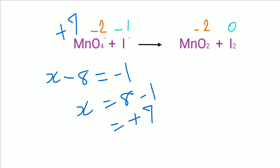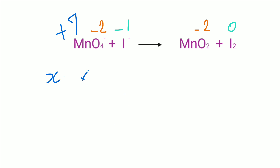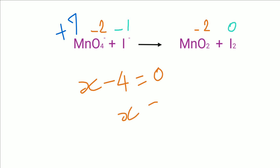Next, we need to calculate the oxidation number of manganese in manganese dioxide. Let x be the oxidation number of manganese. There are two oxygen atoms, each minus 2, giving minus 4. Since manganese dioxide is a neutral compound, the sum of oxidation numbers equals 0. Therefore x equals plus 4. The oxidation number of manganese in manganese dioxide is plus 4.